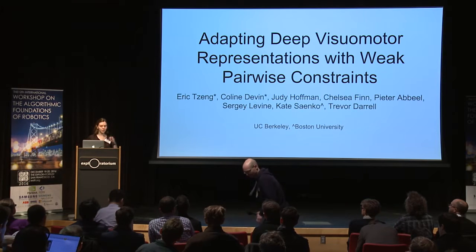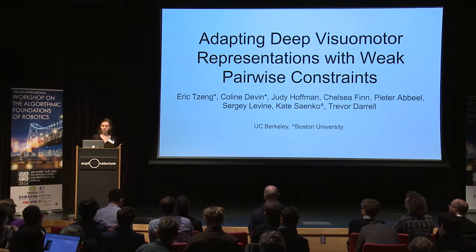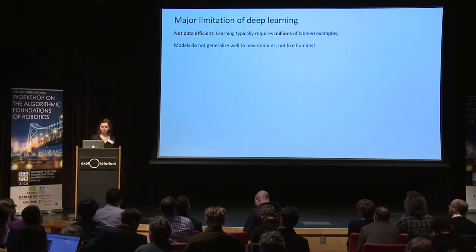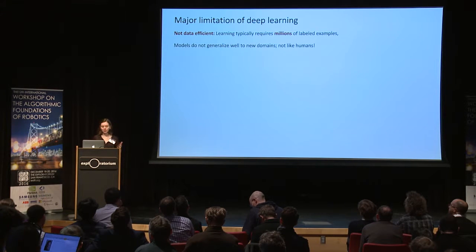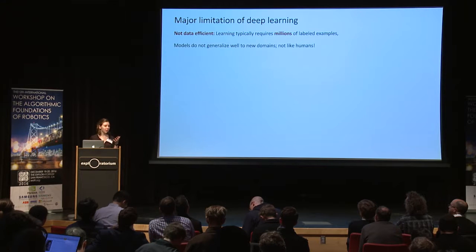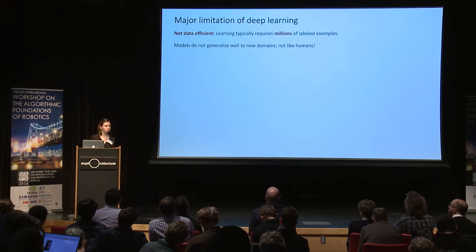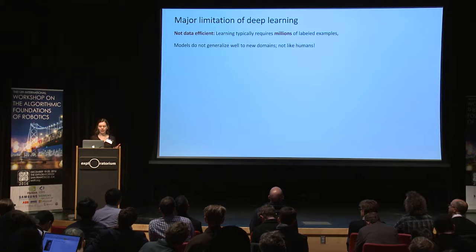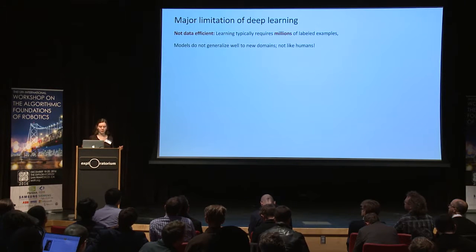We're going to be looking at how to use domain adaptation methods to transfer from simulation to the real world. Deep learning has produced state-of-the-art results in a lot of visual tasks, but one problem is that it requires millions of labeled examples.